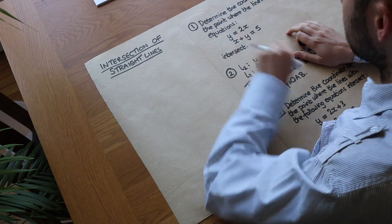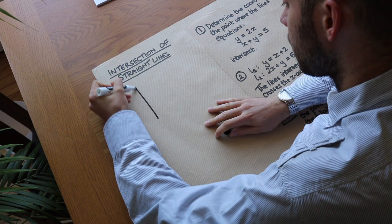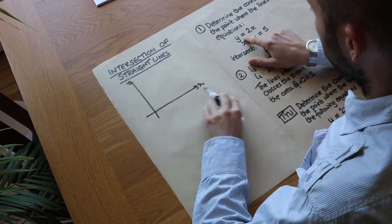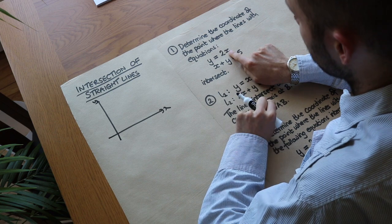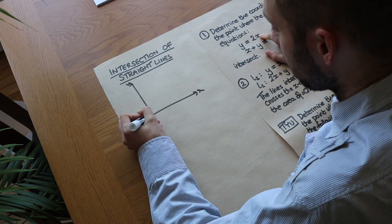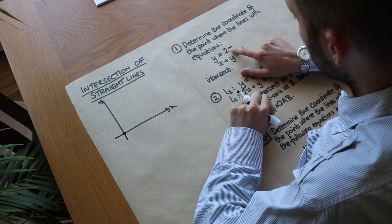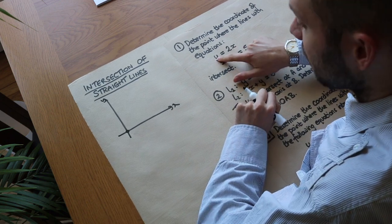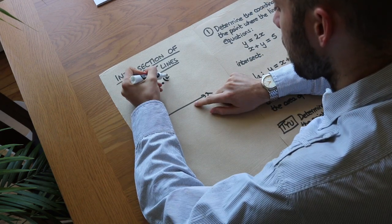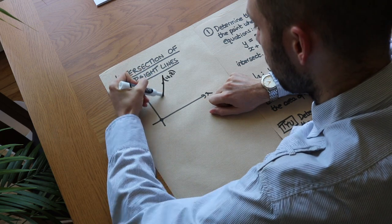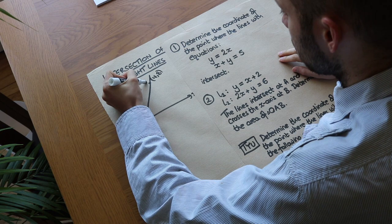What we could do is draw these two straight lines and see where they actually intersect graphically. For y equals 2x, we choose two suitable values of x. If x is 0, y is 0, so it goes through (0, 0). If x is 4, y is 8, so the point (4, 8) is here. We join those up with a straight line and label it y equals 2x.